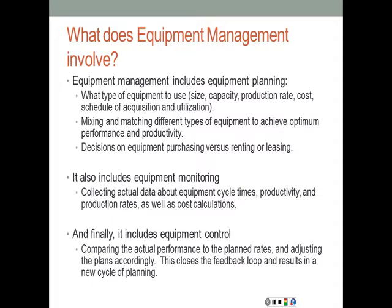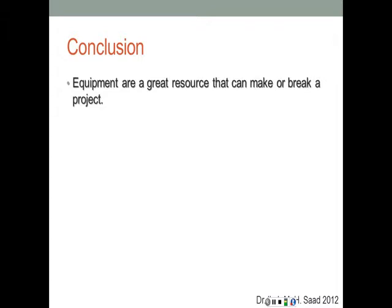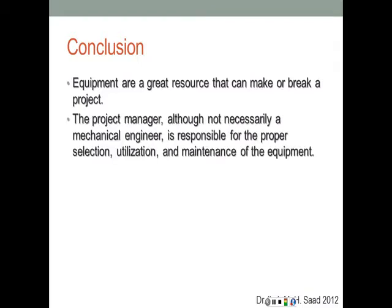Equipment control involves comparing actual performance to planned rates and adjusting plans accordingly. When deviations or variances occur, we adjust the plan and identify the reasons so we don't repeat the same mistakes on future projects. This control closes the feedback loop, resulting in a new cycle of planning. In conclusion, equipment is a great resource that can make or break a project. The project manager — though not necessarily a mechanical engineer — is responsible for proper selection, utilization, and maintenance of equipment, as a project manager controls the whole site.